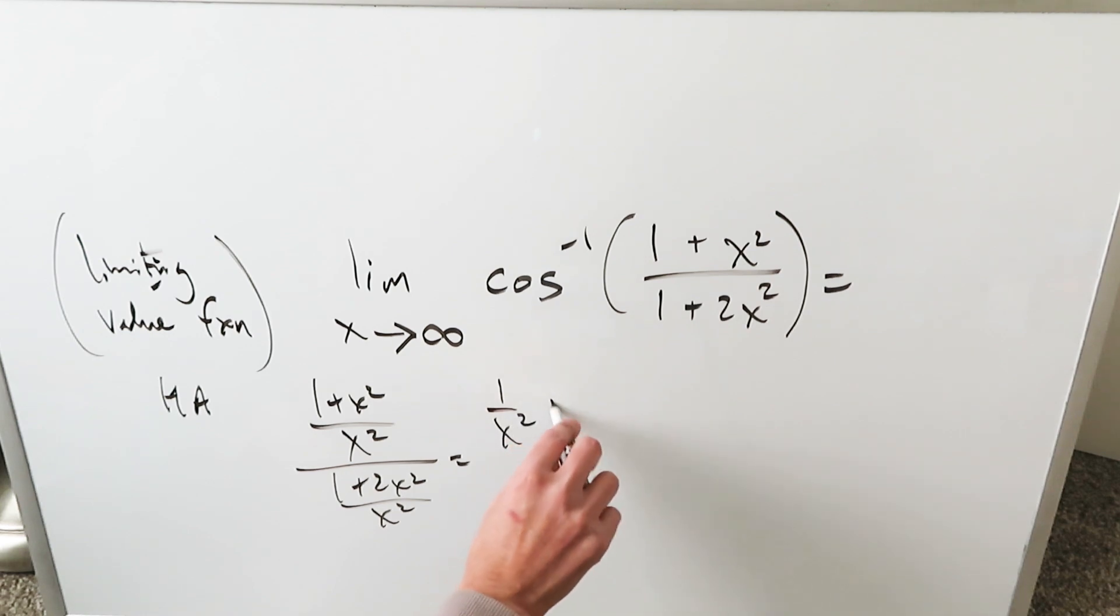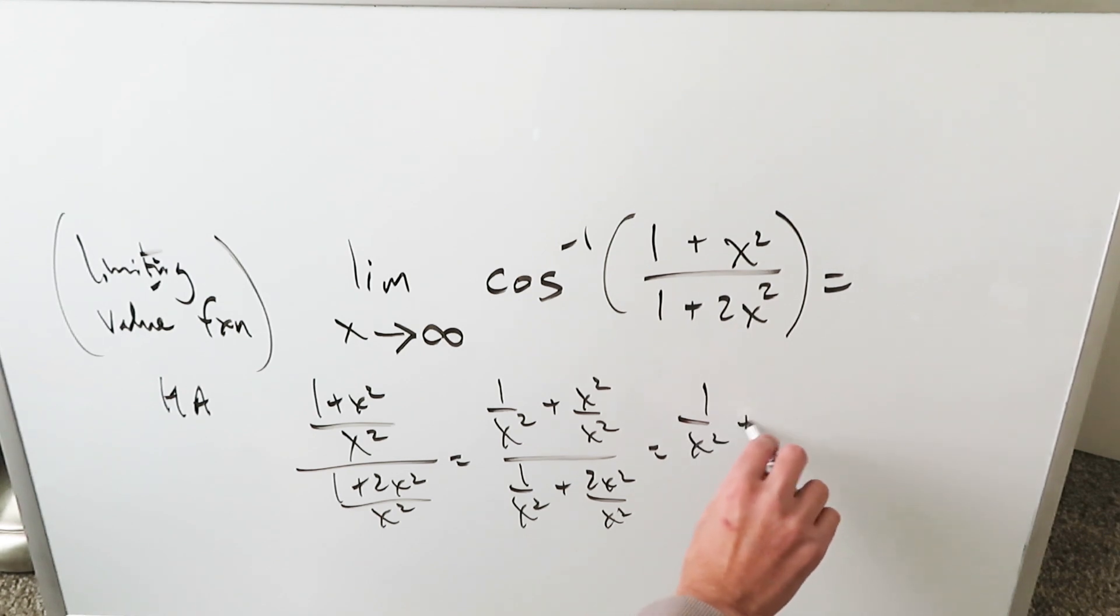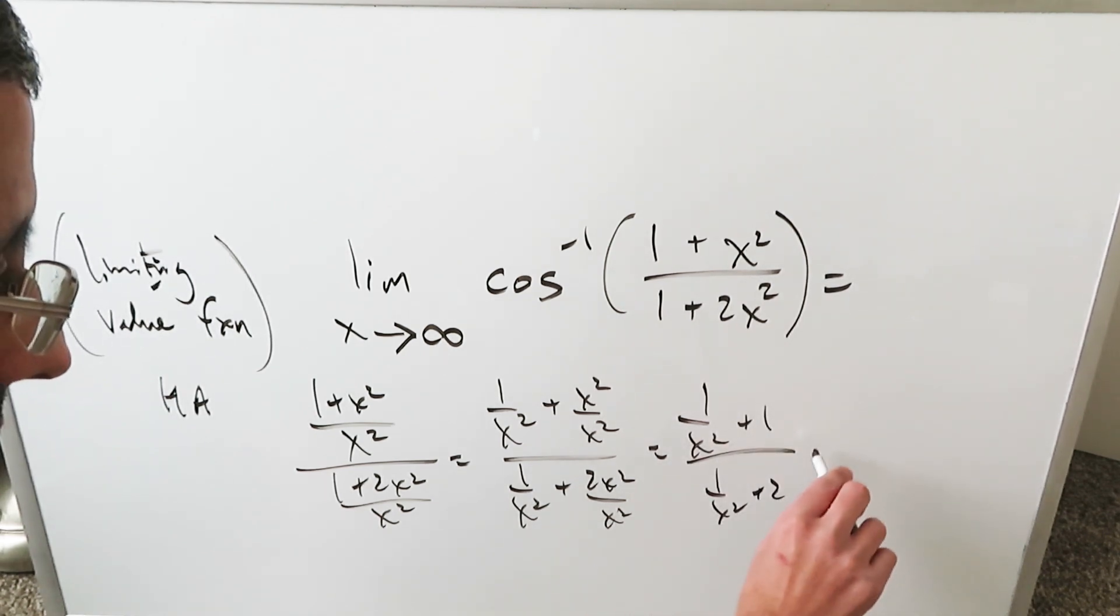When you do this, you're getting 1 over x squared plus x squared over x squared in the numerator. In the denominator, you get 1 over x squared plus 2x squared over x squared. When you simplify it out, you have 1 over x squared plus 1 divided by 1 over x squared plus 2.